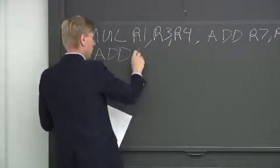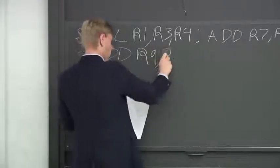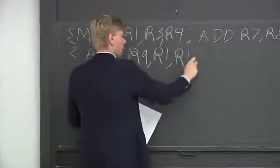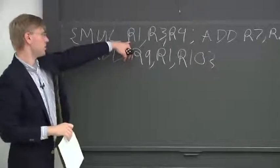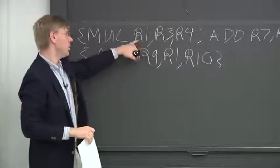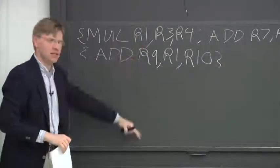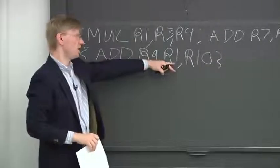We have an add, which reads r1. Note, this multiply writes r1. But as we said, the multiply has a latency of four cycles. So this, in an EQ model,